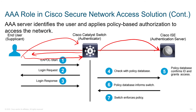The database confirms the ID and grants access. A lot of times we don't just instantly grant access — we specify the details. So our results come back: access granted, along with those AV pairs — attribute value pairs — such as VLAN 99, downloadable access list 101, MaxSec policy must secure, things like that.